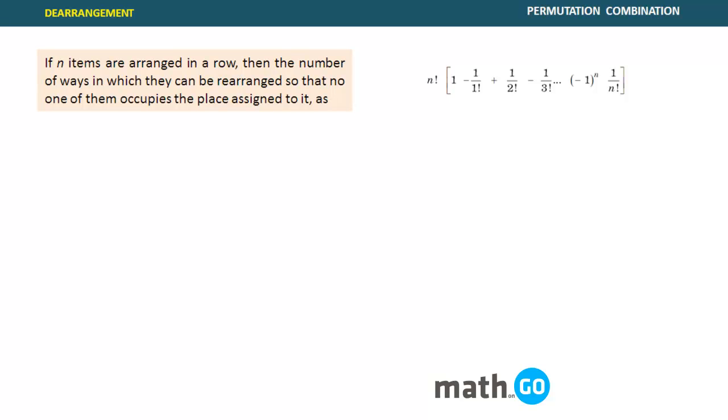Okay, the next topic that we have to talk about is derangement. It means that if n items are arranged in a row, then the number of ways in which they can be rearranged so no one of them occupies the place assigned to it.